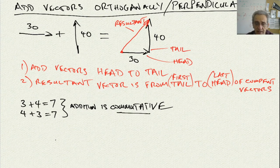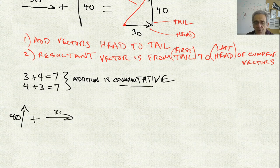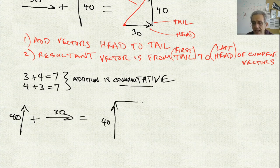Adding vectors is also commutative. In this case, I've added 30 plus 40. What if I did the 40 first and then added the 30? Here's my 40, and then if I add head to tail, here is my 30. If I draw the resultant, notice that this resultant is the same direction and magnitude as the previous one.